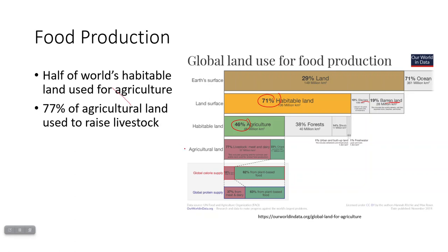77% of the land we use for agriculture is not used to directly feed humans — instead, it's being used to feed livestock. Livestock doesn't provide a very large chunk of our calorie intake, so we're using a giant amount of land to support the caloric needs of very few people. Even when we look at protein, which most people associate with meat eating, only 37% of it comes from meat and dairy. About 63% comes from plant-based food.